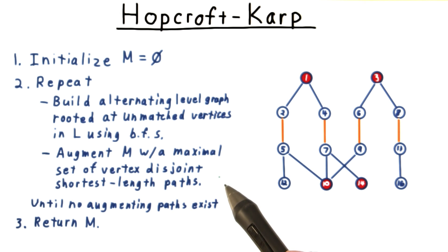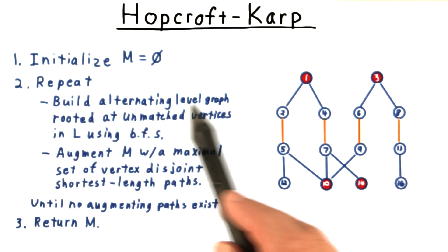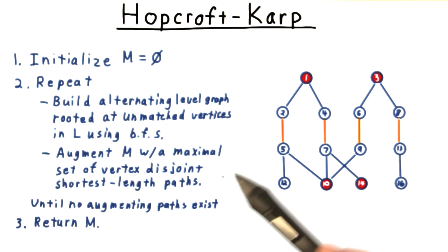Once we've applied all these augmenting paths, we go back and rebuild the level graph and keep doing this until no more augmenting paths exist. And then we can return the matching that we found.